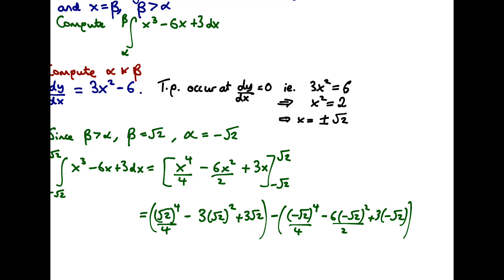Which simplifies down to 3 root 2 minus minus 3 root 2, which gives us 6 root 2. So the answer is f.